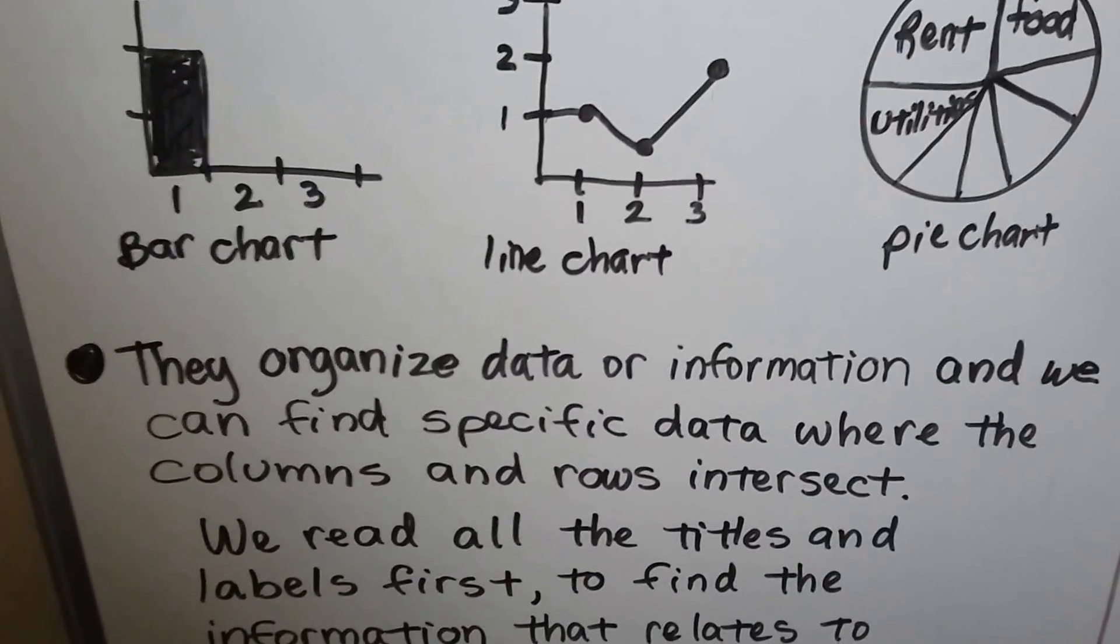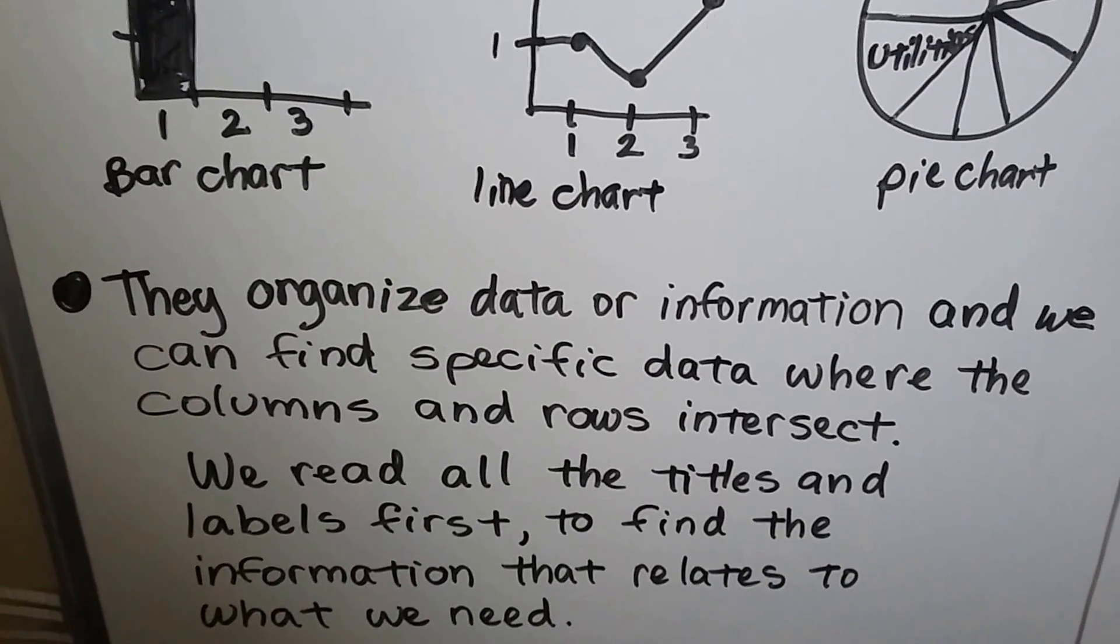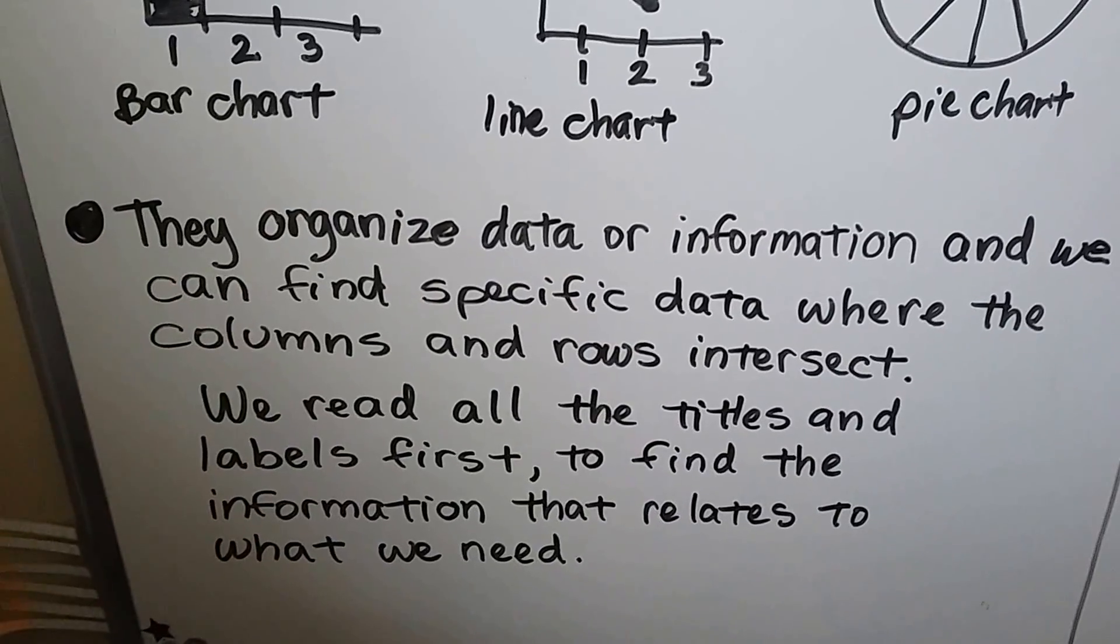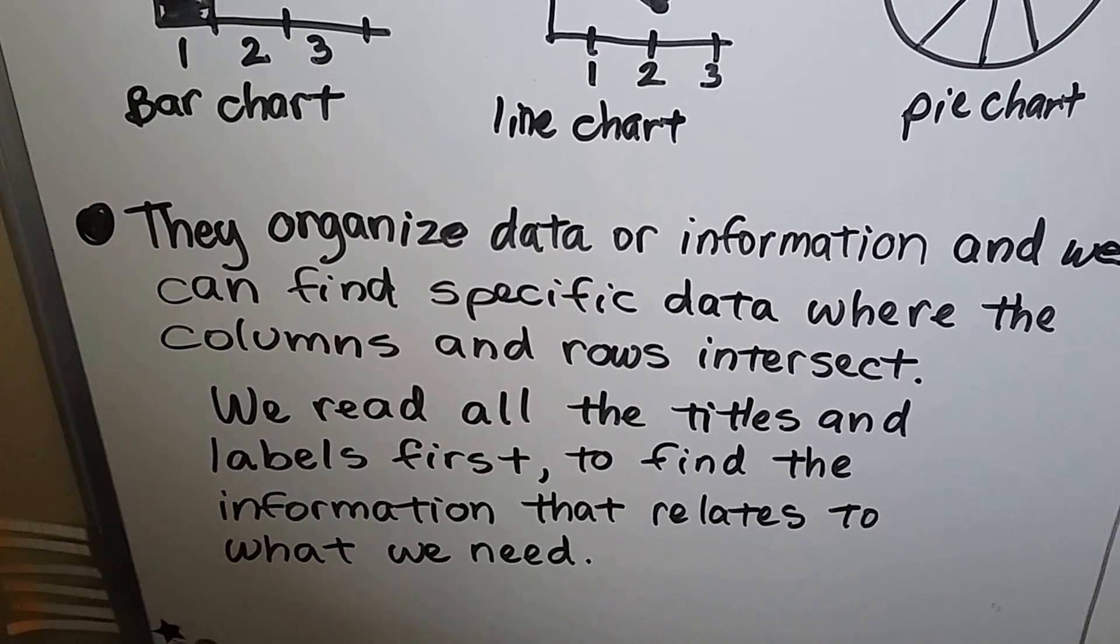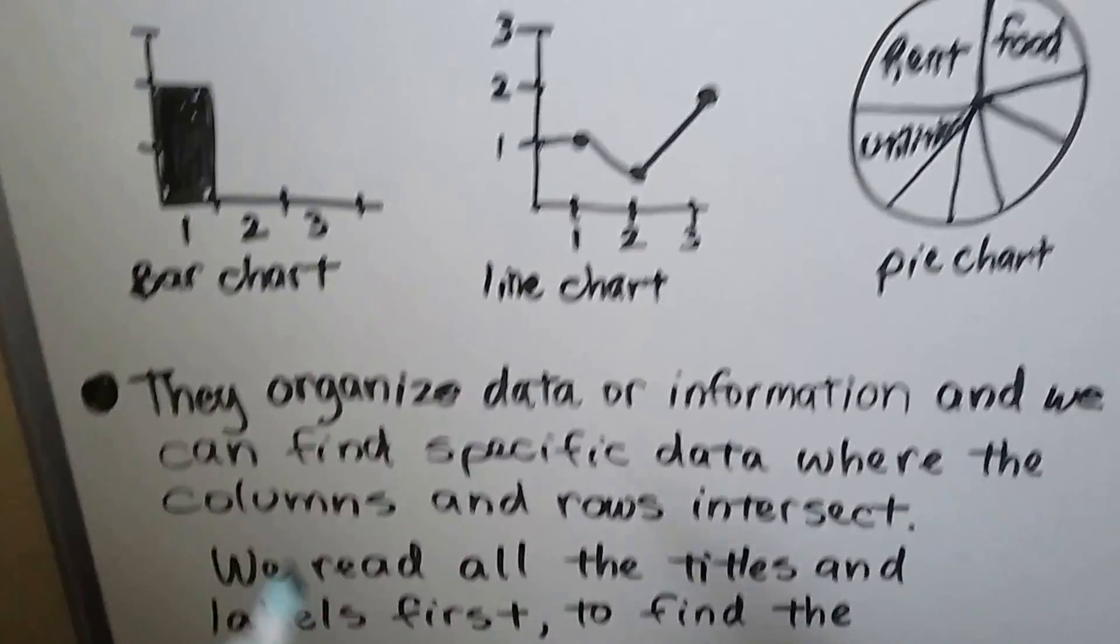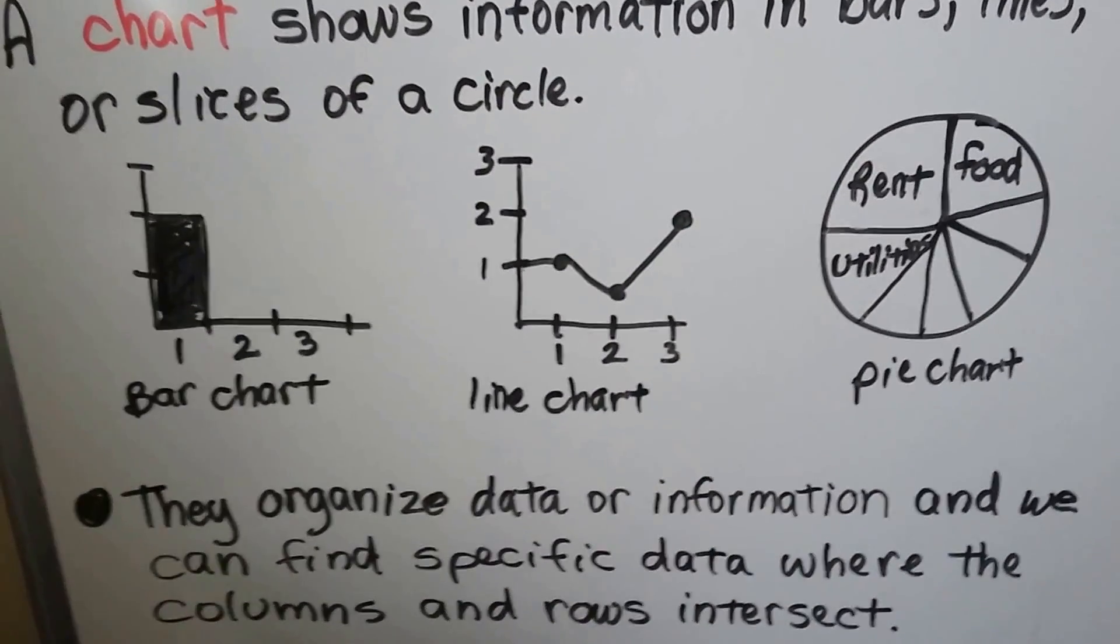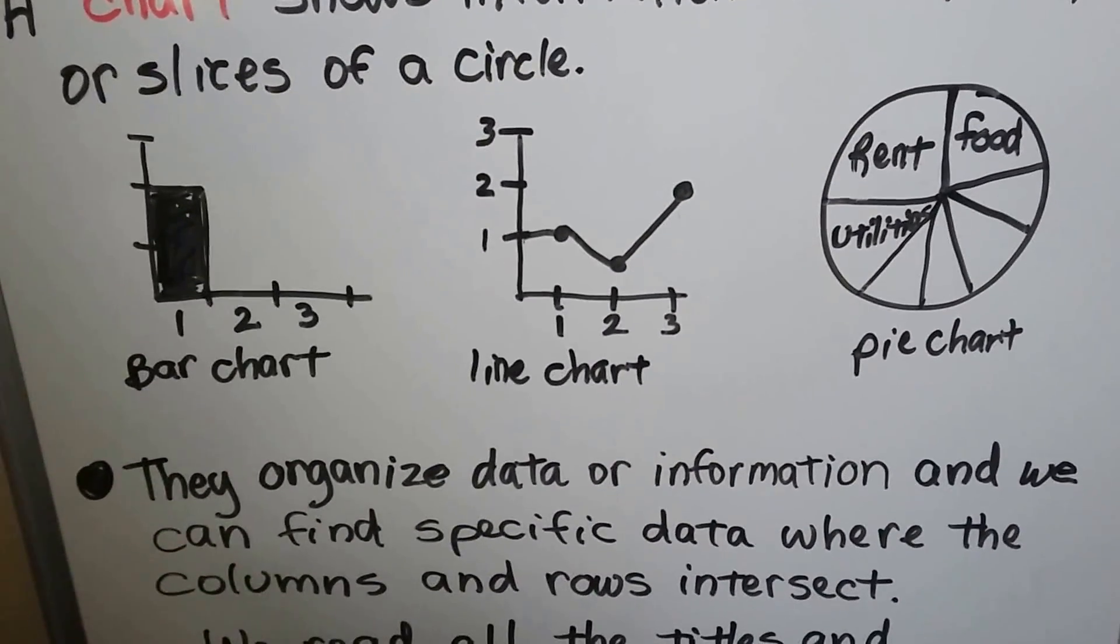They organize data or information, and we can find specific data where the columns and rows intersect. We read all the titles and labels first to find the information that relates to what we need. So if we're looking for some specific information, we have to read all the titles and labels first.